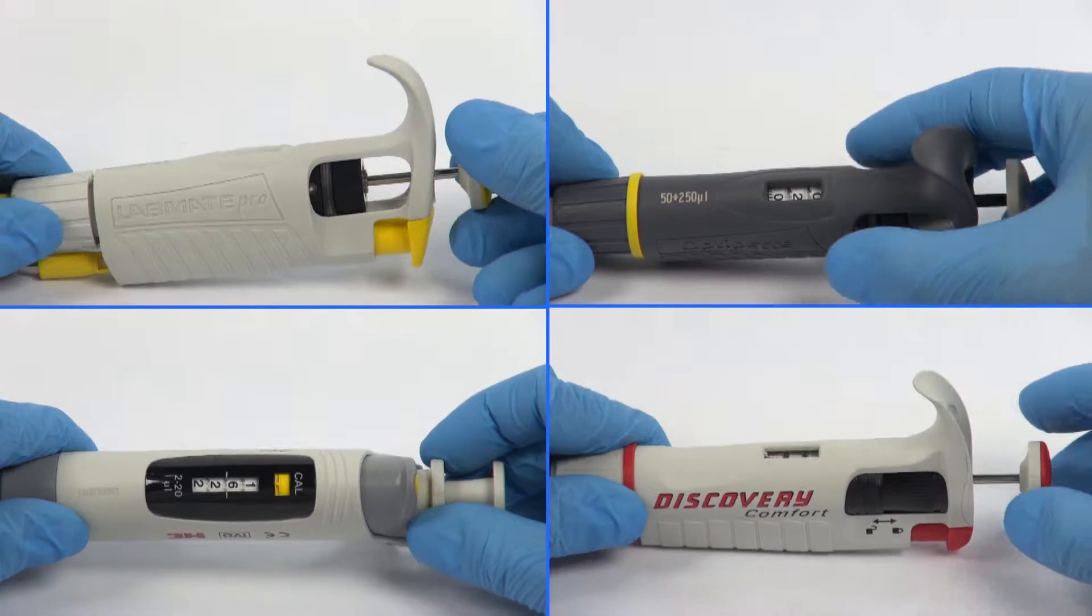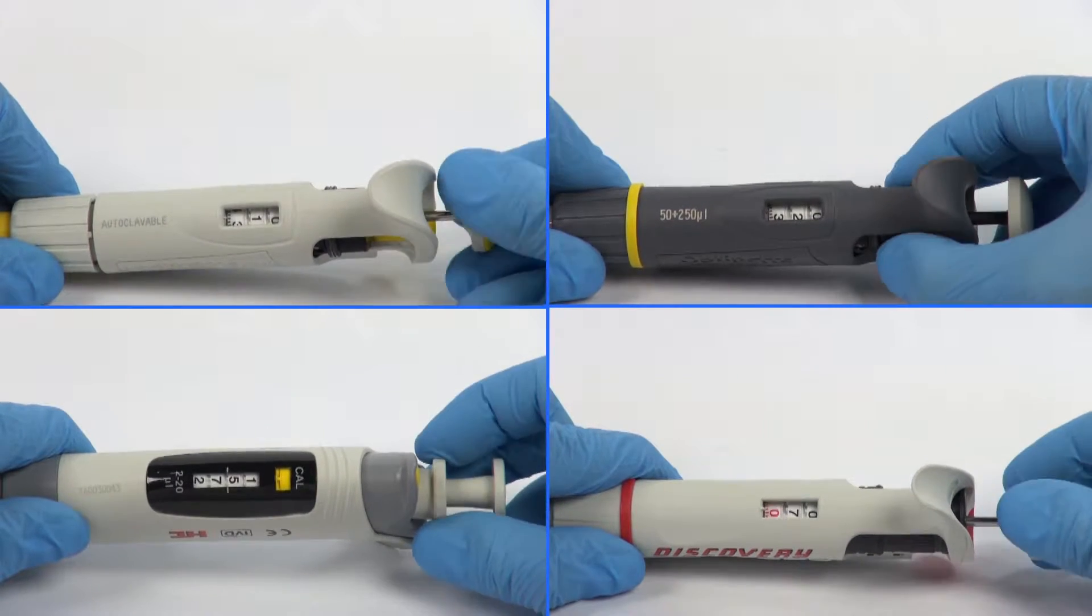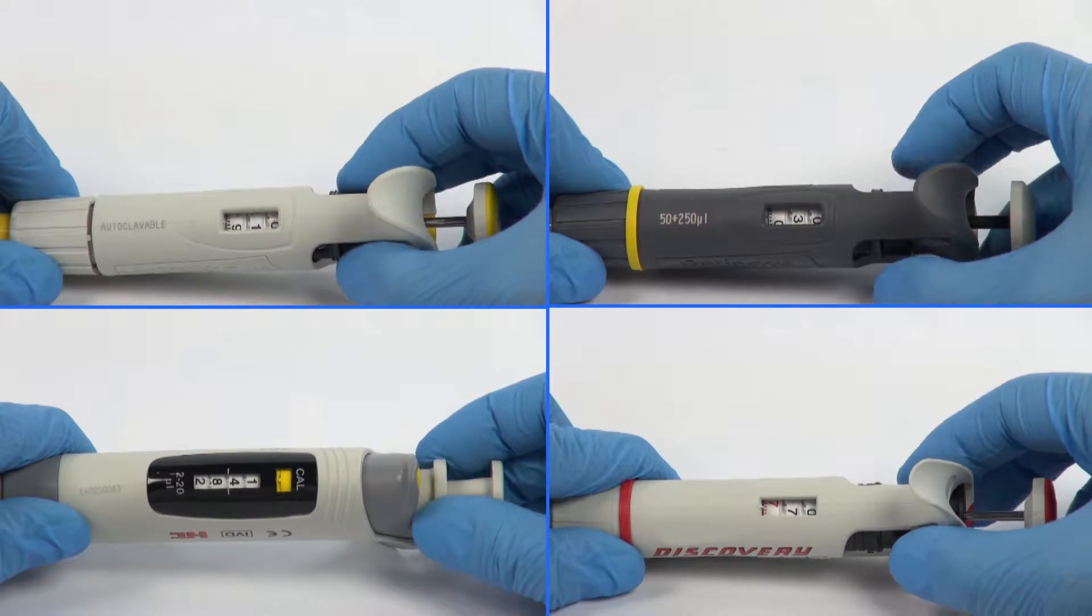Depending on the pipette model, the setting of the volume of the aspirated liquid can be done either by the pipette push-button or by the volume adjustment knob.